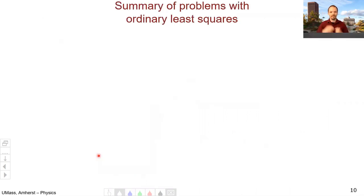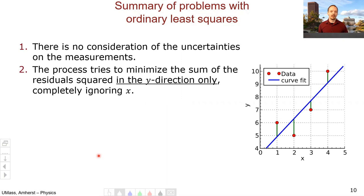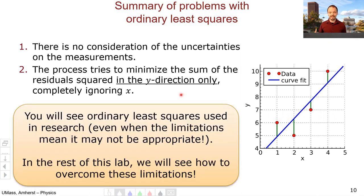To summarize the problems with ordinary least squares: first, there's no consideration of the uncertainties of the measurements — that's a problem we still need to deal with. Second, as explored in this video, the process tries to minimize the sum of residuals in the Y direction only; we don't minimize the distance in X at all. You'll often see OLS fits used in research even when these limitations mean it might not be appropriate. In the rest of this lab we will be looking at how to overcome these two limitations.